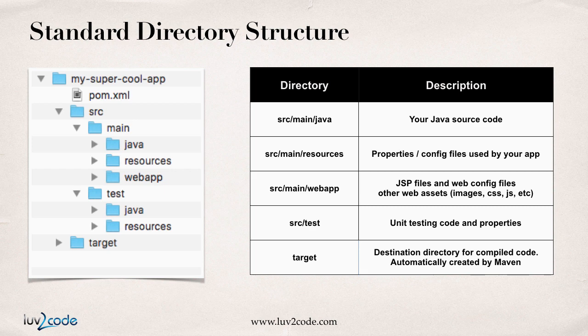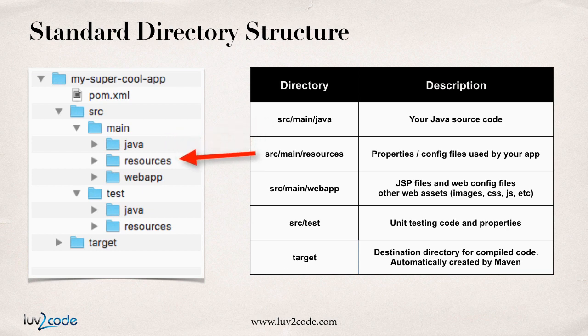Here's the directory structure. My super cool app — at the root of the directory, I'll have this pom.xml file. That's the Maven configuration file, your shopping list. We'll cover the pom.xml file in more detail later. We have this one area called source main Java — this is where you place your Java source code. Then we have a resources directory, where you place your properties files or config files used by your application.